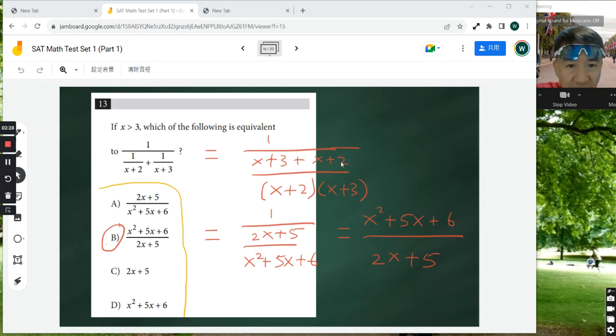Now simplify the line in the middle here, which is equal to 2x plus 5. So 1 over 2x plus 5 divided by the product of these two binomials.